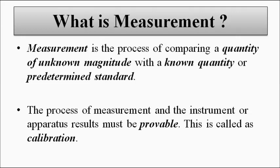Measurement is basically the comparison of the unknown parameter — the unknown signal of interest — with a known quantity, a reference, or a predetermined standard value. This process is accomplished with the help of a device or instrument, and the results we obtain must be provable, such that for a fixed input the instrument will give a fixed output. When we apply the same input again we get the same output. This process is called calibration, which we will discuss in performance characteristics in detail.